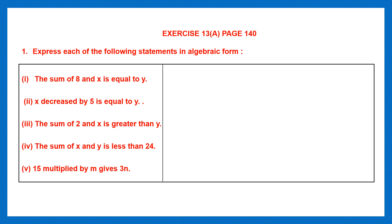The first one: the sum of 8 and x. Sum means addition. So sum of 8 and x means 8 plus x, equal to y. As you can see, we have not used any word here — we have only used signs and symbols along with the numbers and the variables.